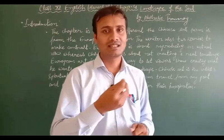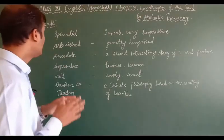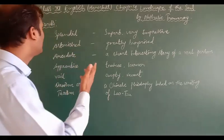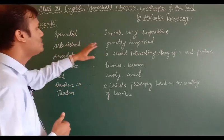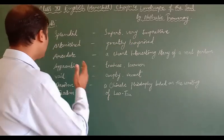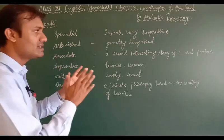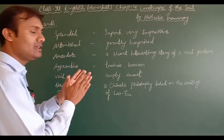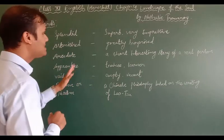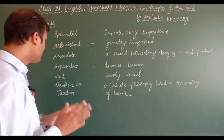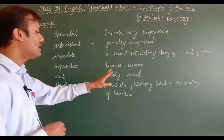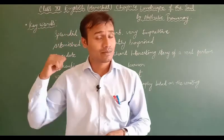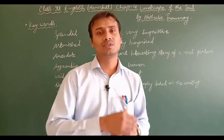Before coming to the summary, let's discuss some of the keywords of this chapter. The first word is splendid, which means superb or very impressive. Astonished means greatly surprised. Anecdote means a short interesting story of a real person. Apprentice means a trainee or a learner. Void means empty or vacant. Taoism is a Chinese philosophy based on the writing of Lao Tzu.